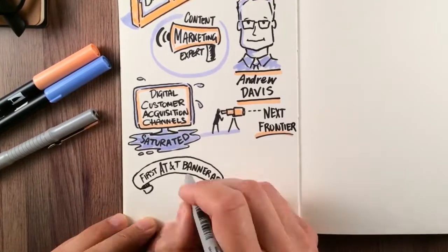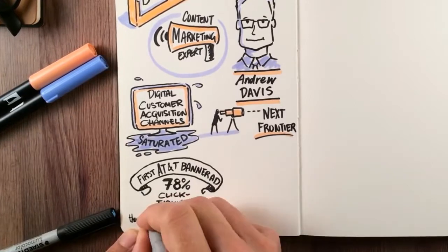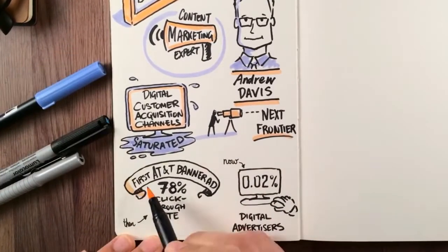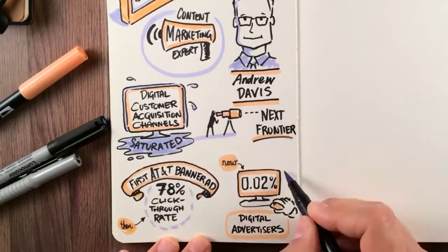Did you know that the first banner ad by AT&T had a 78% click-through rate? Now, digital advertisers consider a click-through rate of 0.2% actually pretty decent.